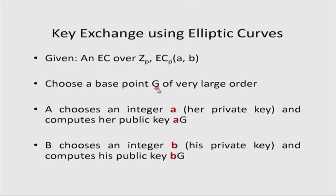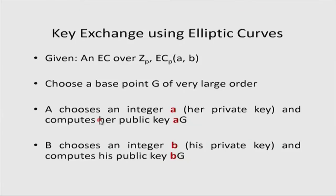G is a generator of a very large subgroup of the elliptic curve group. Given all this setup, we can start Diffie-Hellman key exchange. A chooses an integer a as her private key and computes her public key as a times G. Notice how similar this is to regular Diffie-Hellman: there, A chose a private key and computed the public key as g^a. Here, instead of exponentiation, we use scalar multiplication - adding G to itself a times - because the group operation is addition of points.